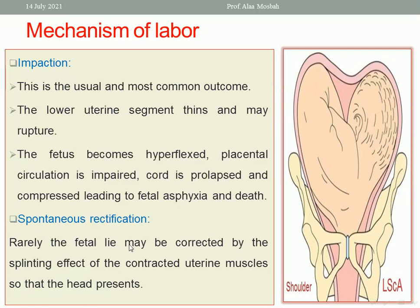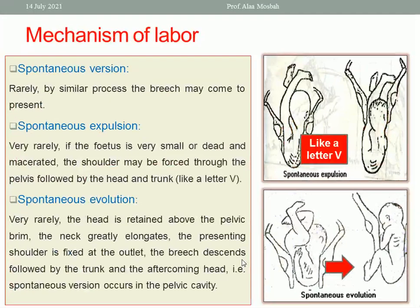Another possibility is spontaneous rectification — this means the fetus corrects itself to cephalic presentation and is delivered as cephalic with uterine contractions. Or, with uterine contractions, the transverse lie may change to breech presentation and be delivered as a breech. So either spontaneous rectification to cephalic or spontaneous version to breech presentation.